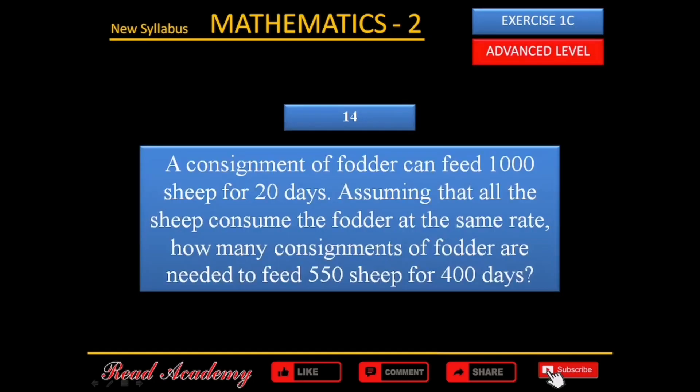A consignment of fodder can feed 1000 sheep for 20 days. Assuming that all the sheep consume the fodder at the same rate, how many consignments of fodder are needed to feed 550 sheep for 400 days?